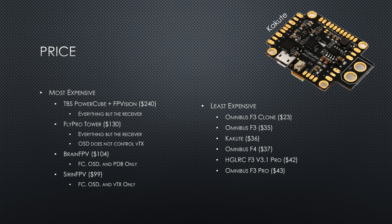And then we come to price. The most expensive boards are the TBS PowerCube and FPVision at $240 — that gives you everything but the receiver, but it's almost as much as some copters. The FlyPro Tower at $130, again everything but the receiver, has a few limitations compared to TBS but is about $100 cheaper, so it's competitive. The Brain FPV is $104 and the Serin FPV is $99, and those don't even include ESCs. The least expensive are the standalone boards — the Omnibus F3s, the Kakute, the Omnibus F4, the HDLRC, and so on.